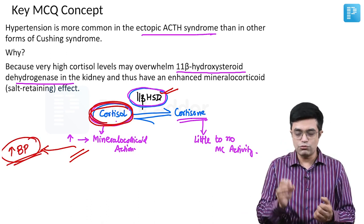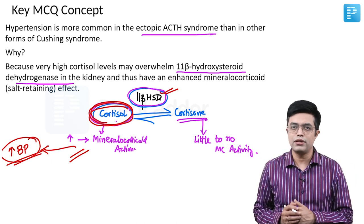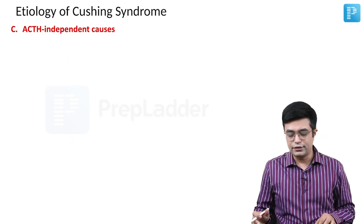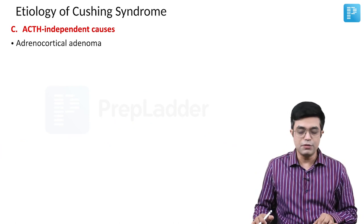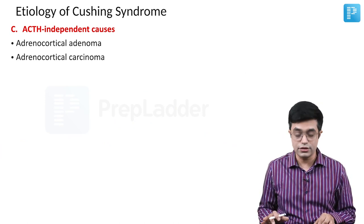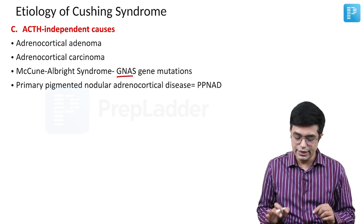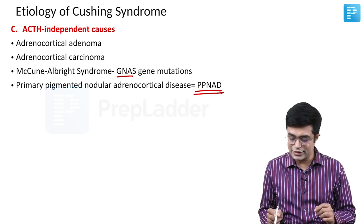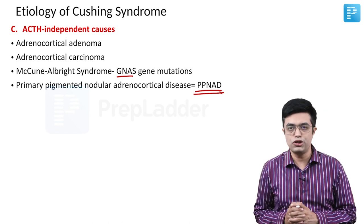This concept is mentioned in Nelson's textbook and has been indirectly asked in older super-specialty central institute exam papers. The third category of Cushing syndrome causes is ACTH-independent causes, which include adrenocortical adenoma, adrenocortical carcinoma, McCune-Albright syndrome with GNS gene mutations, and primary pigmented nodular adrenocortical disease (PPNAD).